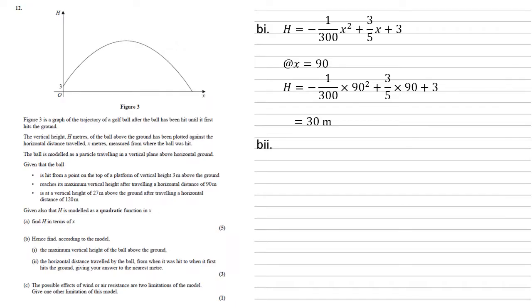Part two, the horizontal distance travelled by the ball from when it was hit to when it first hits the ground, giving an answer to the nearest meter. So when the ball hits the ground, h must be equal to zero, so we're going to set our quadratic equal to zero, and now solve this.